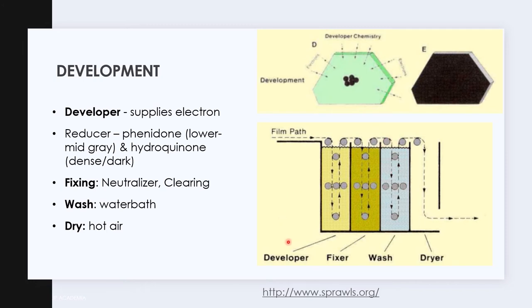First, the developer. The developer solution supplies electrons that go into the sensitized grains and convert the remaining silver ions into black metallic silver.